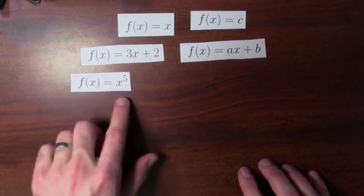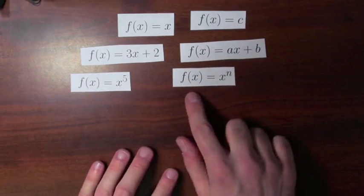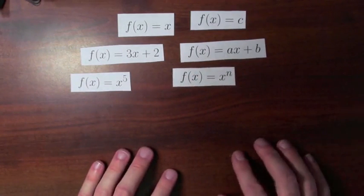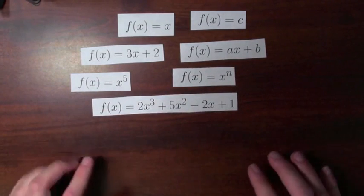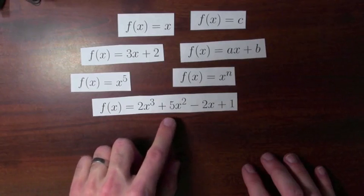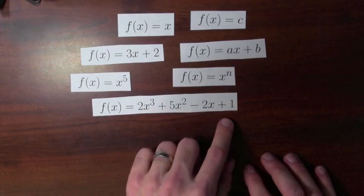You can think about 5th powers, f of x equals x to the 5th, or nth powers, f of x equals x to the nth, for some fixed value of n. Think about polynomials, like this complicated looking polynomial, f of x equals 2x cubed plus 5x squared minus 2x plus 1.